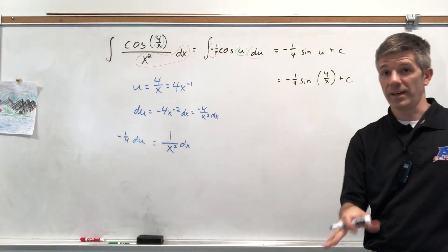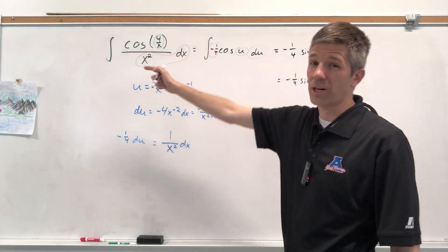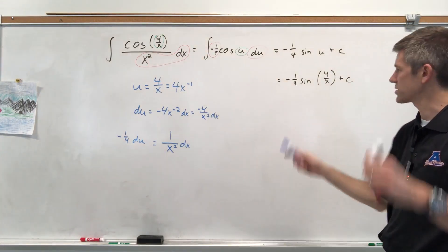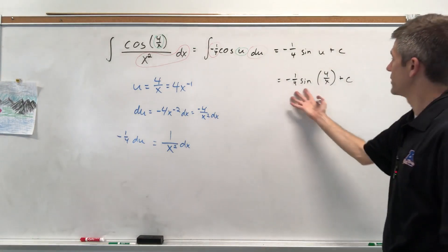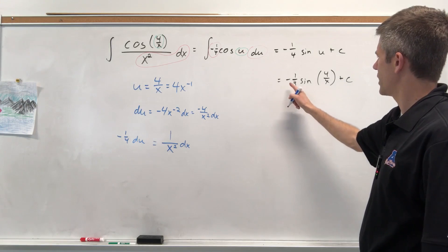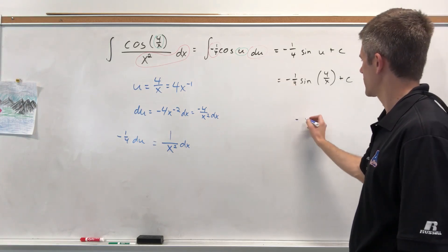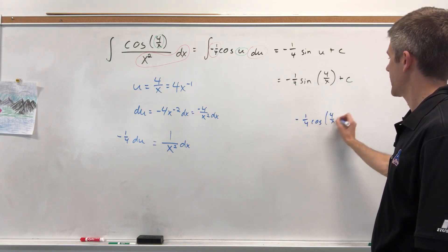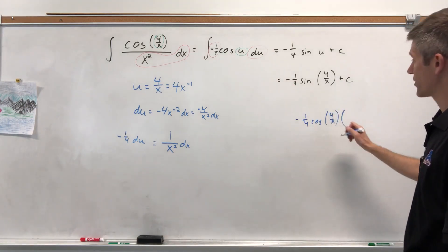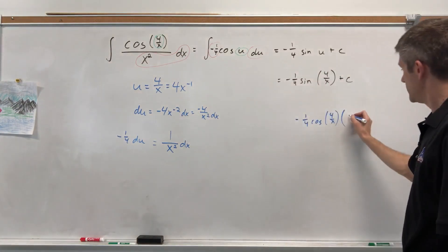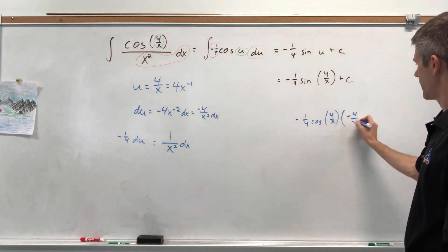If you took the derivative of this, you would get what we had to start with very quickly with the blue pen. I'm going to show you that just for the sake of doing it. So the derivative of this, of course the C would go away. I would do derivative of negative 1 4th sine, which would be negative 1 4th cosine. Keep the inner part intact, this chain rule. And then multiply by the derivative of 4 over X, which we actually already did. It's negative 4 over X squared.